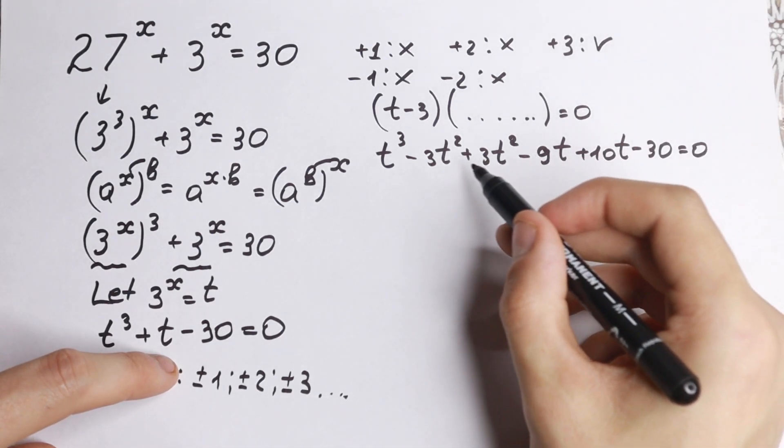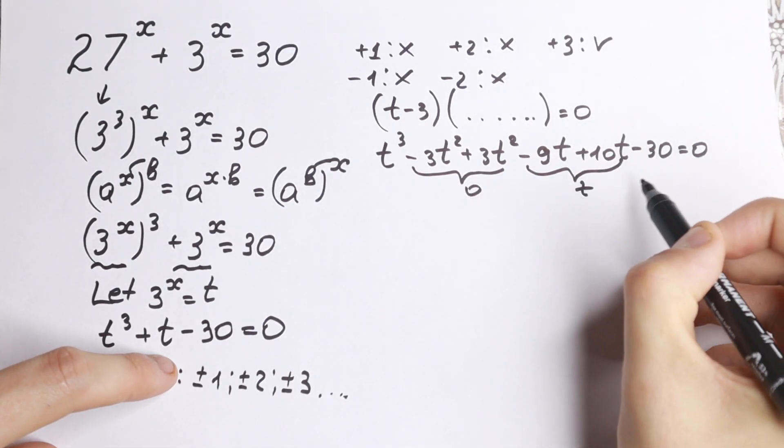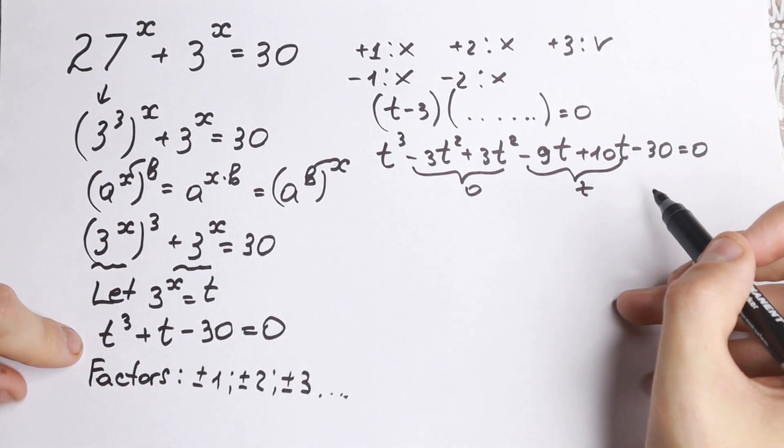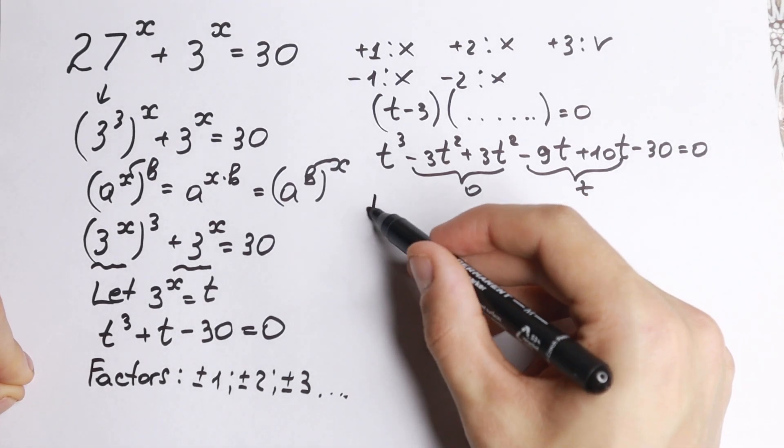So I write minus 9t plus 10t and minus 30. And if you look closely, this equal to 0 and this equal to t. So as you can see, this is the same as the original equation.